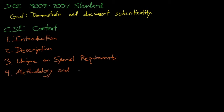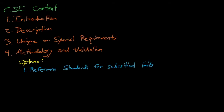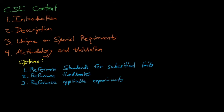Next, we can discuss the methodology and validation methods that have been used to establish the subcritical limits for the CSE. There are four methods routinely used: first, to reference national consensus standards that present critical and/or subcritical limits; next, to reference accepted handbooks of critical and/or subcritical limits; third, to reference experiments with appropriate margin or adjustments to ensure subcriticality given uncertainty in the experimental parameters; or lastly, to use validated computational techniques, such as the methods discussed in this course. Most likely we will pick one of these four options and justify and defend its use in this section.